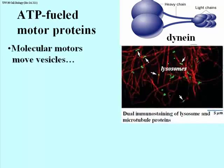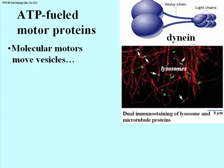Here we have the interior of a cell that has been dually immunostained — one fluorescent antibody preparation against lysosomal proteins and another against microtubules. The green fluorescence shows one or more lysosomes, and you can see that wherever you see green, they are associated with the red stuff, which is the microtubules. You do not see lysosomes sitting out in the middle of black spaces, because they are not free in the cytoplasm but are attached to microtubules, which function as a scaffold on which various cellular structures and organelles are hung.